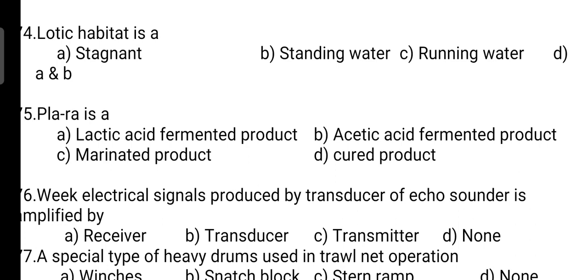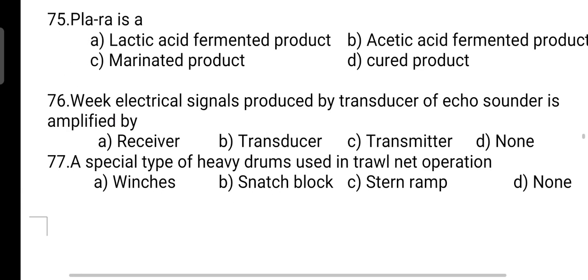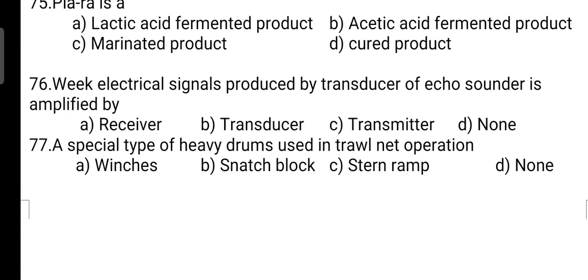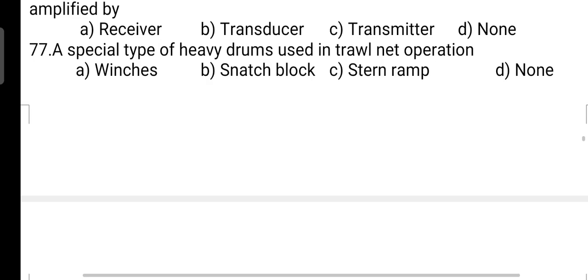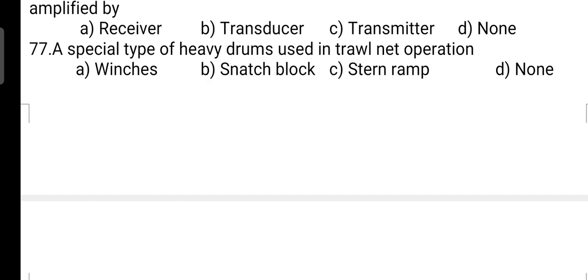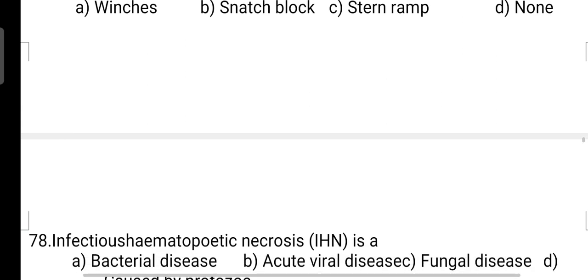Plara is a: correct answer is Option A — it is a lactic acid fermented product. Next, weak electrical signals produced by transducer of echo sounder are amplified by: correct answer is Option A — it is amplified by the receiver. A special type of heavy drums used in trawl net operations: correct answer is Option A — these are known as winches.